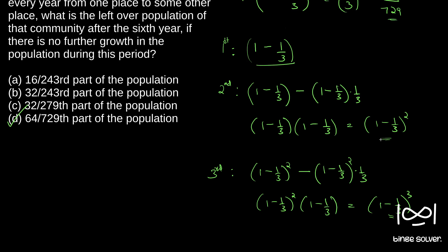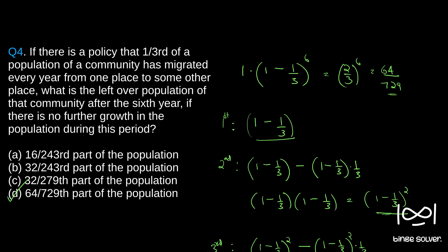So if you see, after 1 year: 1 minus 1 by 3, then second year: 1 minus 1 by 3 the whole square, third year: 1 minus 1 by 3 the whole cube. So similarly, after sixth year what will happen? 1 minus 1 by 3 raised to 6. That is why we got this formula.